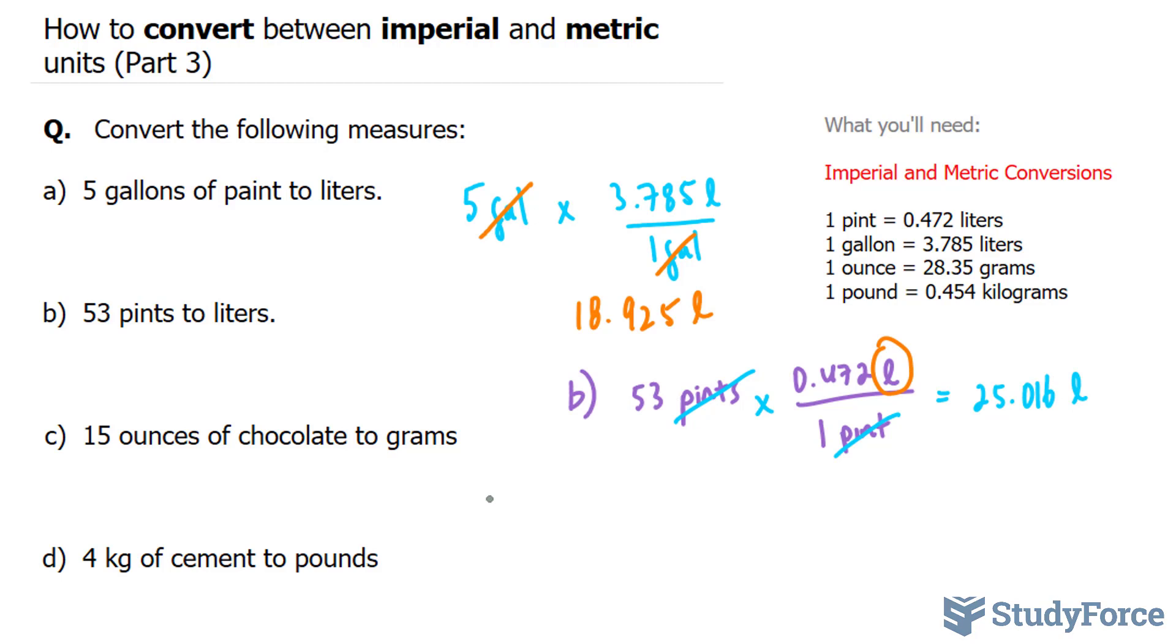Moving on to C. This time, they want us to convert 15 ounces of chocolate to grams. To do this, we'll need this conversion ratio. So I'm going to start off by writing down 15 oz, which represents ounces, times, now this time the ounces needs to be at the bottom. And the grams, 28.35, can be at the top.